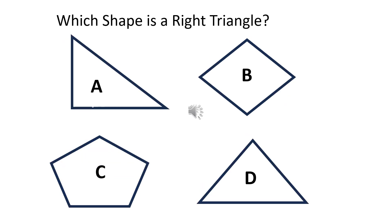Which shape is a right triangle? The right answer is A.